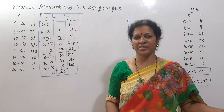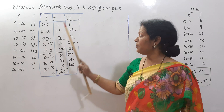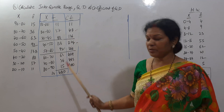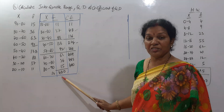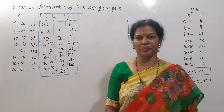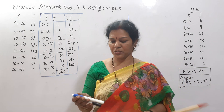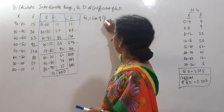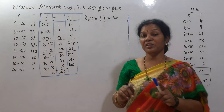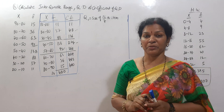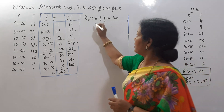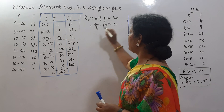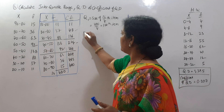Now let's calculate the cumulative frequency (CF) for the continuous series. The first step is to build the CF column, adding up the frequencies cumulatively for each class interval.